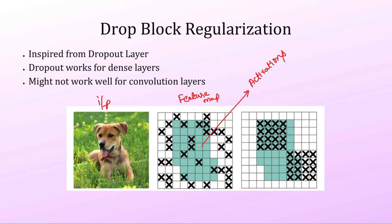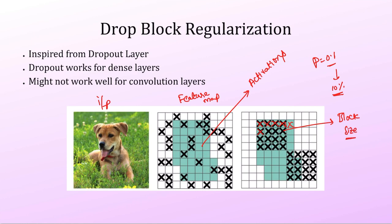Drop block is from a separate paper, and YOLO v4 adopted it. Drop block has two key parameters: a probability (e.g., 0.25, meaning drop 25% of activations) and a block size. Given a 6×6 feature map with probability 0.25, you randomly drop 25% of 36 grids = 9 grids. A random seed point is chosen and expanded by the block size (e.g., 5×5) to form the dropped region.